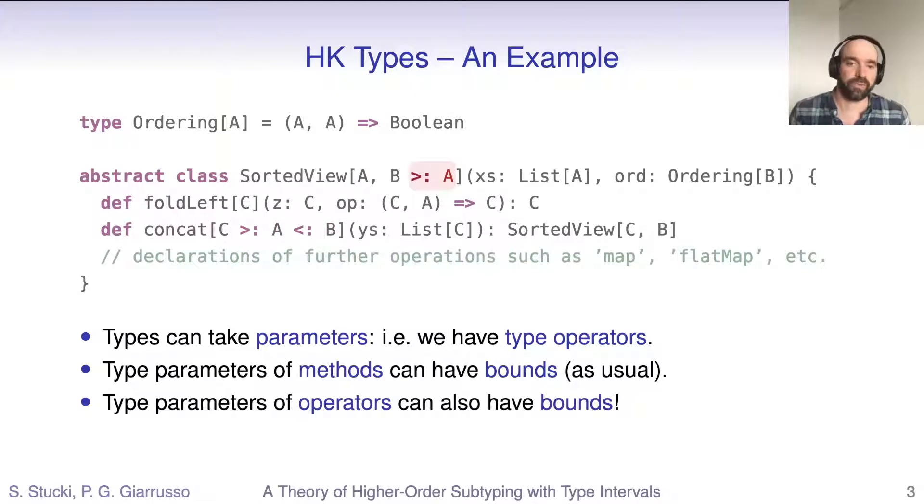And because types can take parameters, it's only natural that we would allow bounds on those as well. This is what is called a bounded type operator. And those are actually fairly exotic in the type theoretic literature.